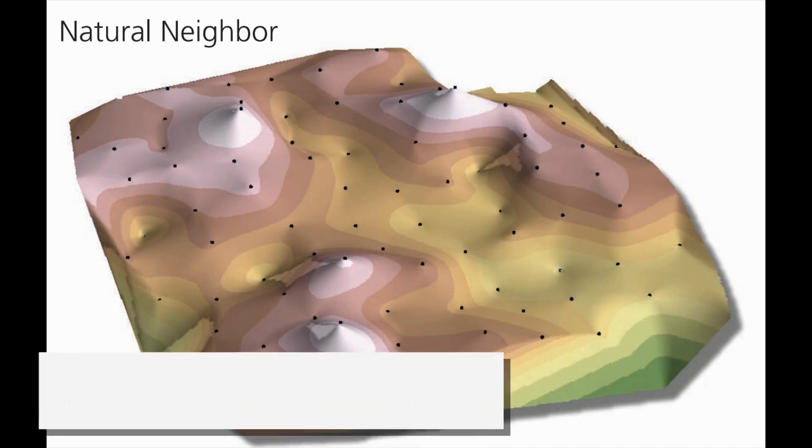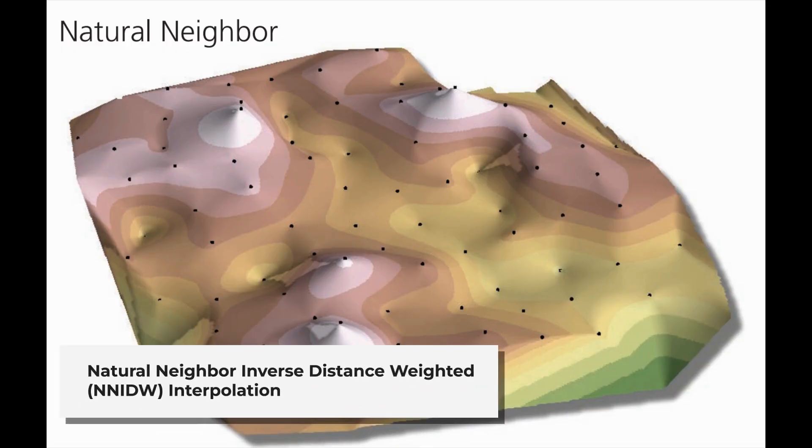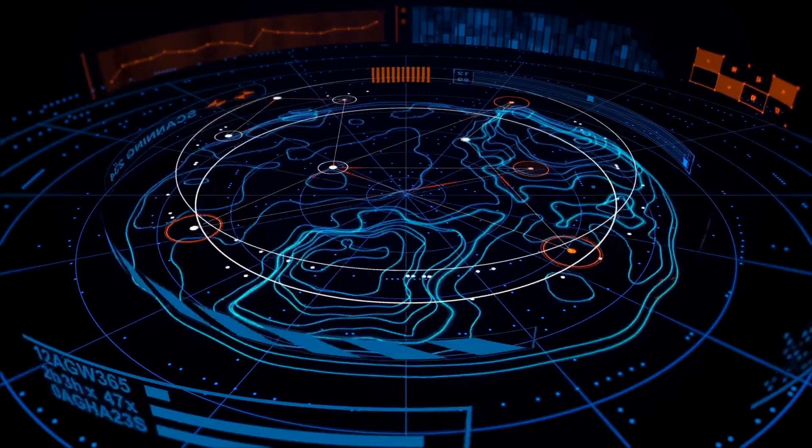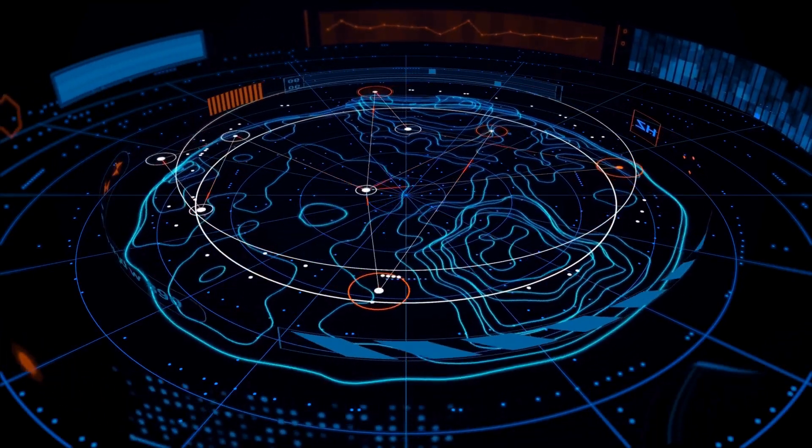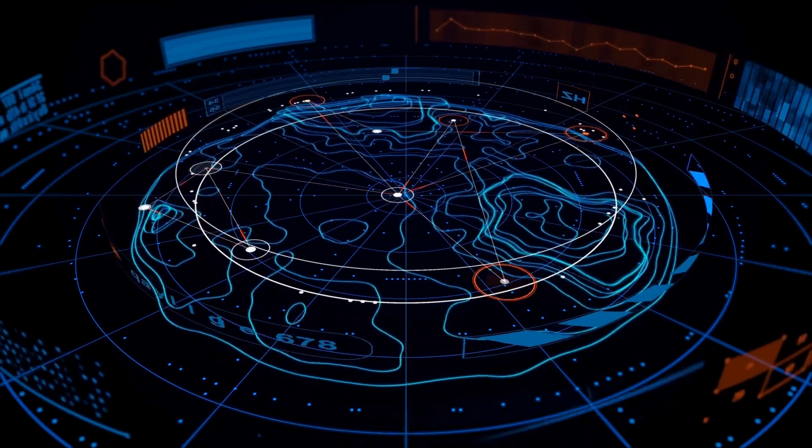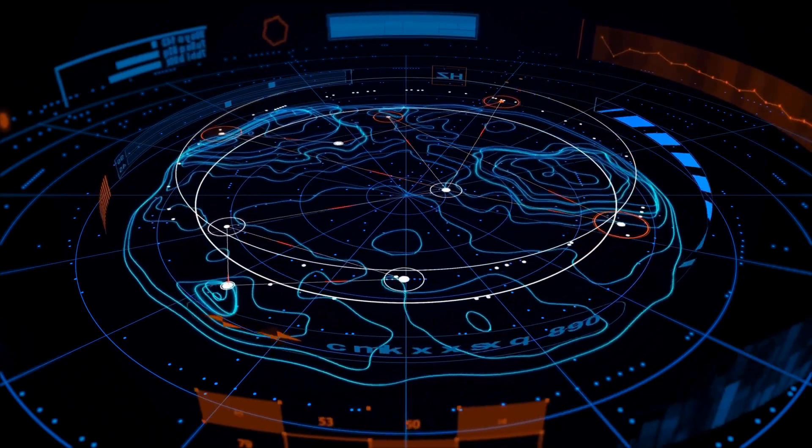Second, natural neighbor inverse distance weighted interpolation. It's similar to IDW, but takes a more geometric approach by finding the closest neighboring points around the unknown location and weighting them based on the area they cover.